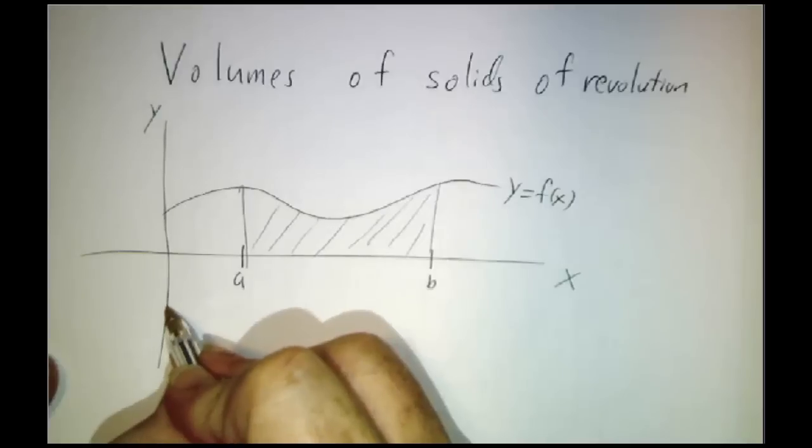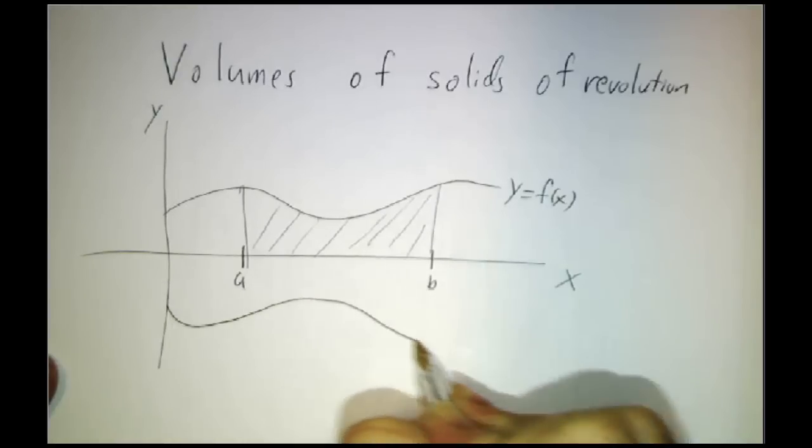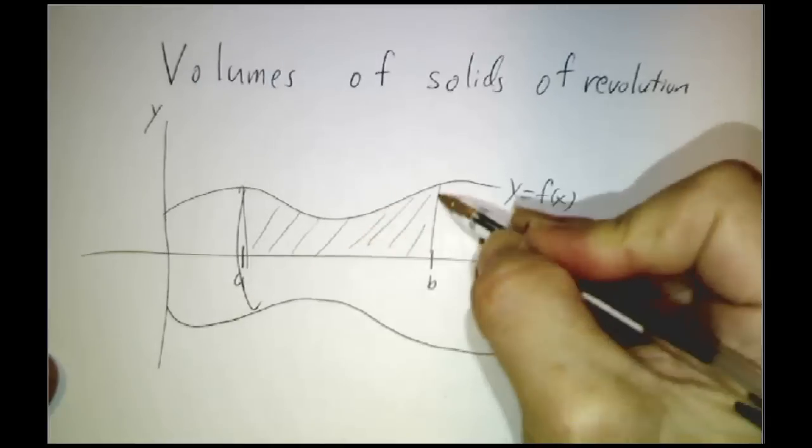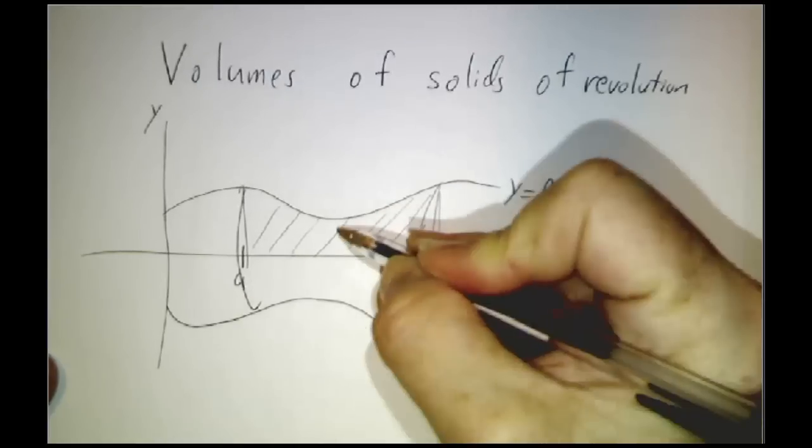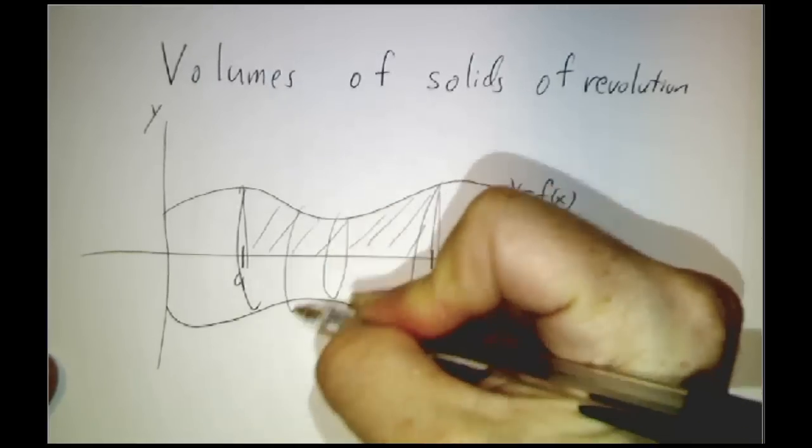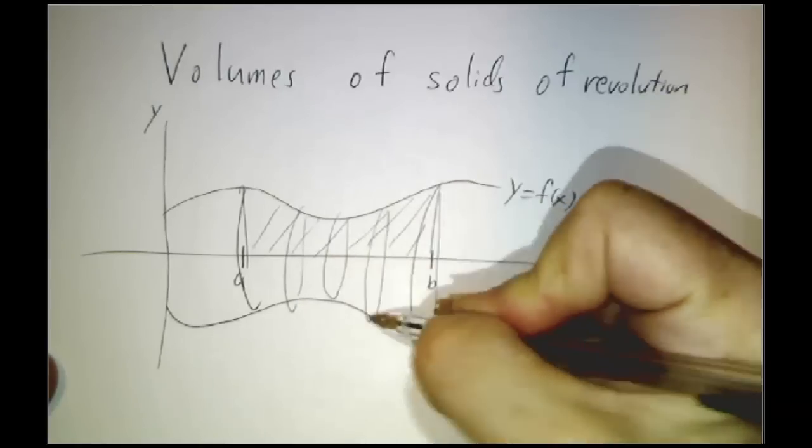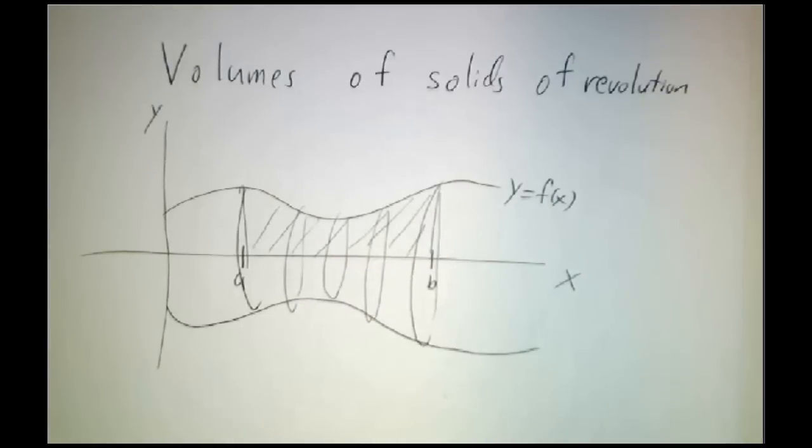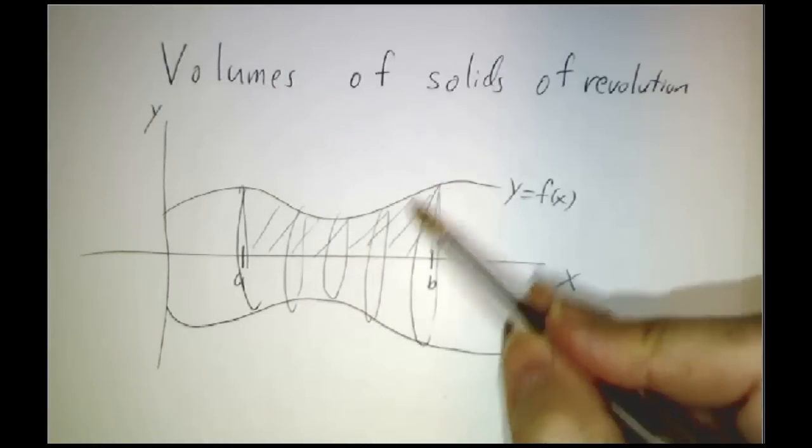So let me draw the mirror image of the curve. And the idea is that we're going to just spin it around and you get this solid region inside this curve.